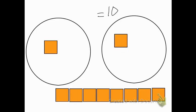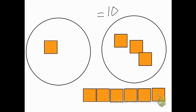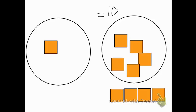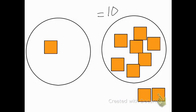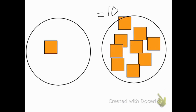So here I have one tile in the first circle, and then tiles in the second: one, two, three, four, five, six, seven, eight, nine, and ten. So you can still see that we have one in the first circle and nine in the second, both totaling 10. So when I write that number sentence: one plus nine equals 10.